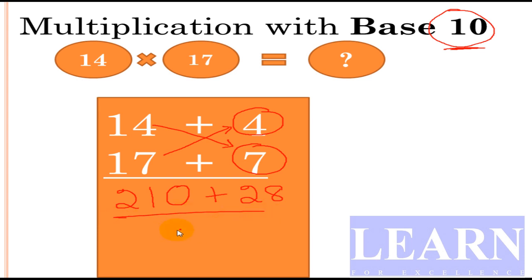I'll repeat it once again. Take 14, add cross, that is 14 + 7, which is 21. Add zero to it, so we'll get 210. And 4 × 7 is 28. 210 + 28 is 238. That is the final answer. We'll look at one more example: 13 × 15.